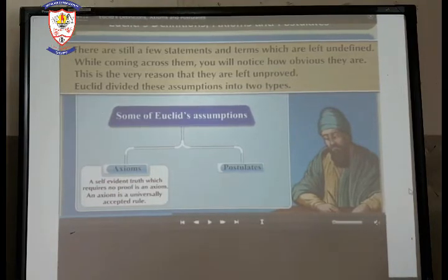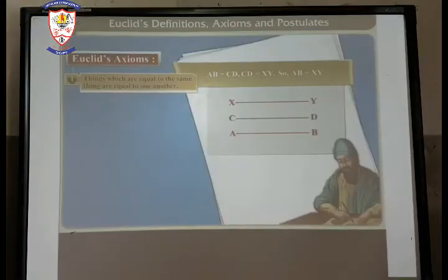Euclid's divided these assumptions into two types: axioms and postulates. What are axioms? A self-evident proof which requires no proof is an axiom. Actually, an axiom is a universally accepted rule.